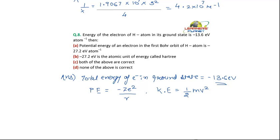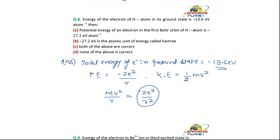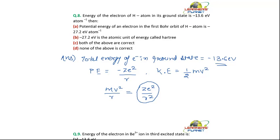Bohr assumed that for an electron to revolve in an orbit, the centripetal force mv squared upon R should be equal to the electrostatic force ZE squared upon R squared. This ZE squared upon R squared is the force of attraction between the nucleus and the electron. From this, we can derive that mv squared equals ZE squared upon R.